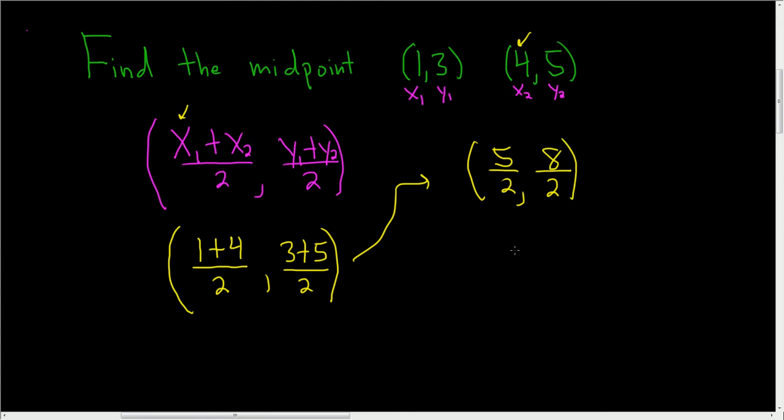We're almost done, but this can be simplified. 8 over 2 is actually 4. So 5 halves, comma 4. And that's how you find the midpoint.